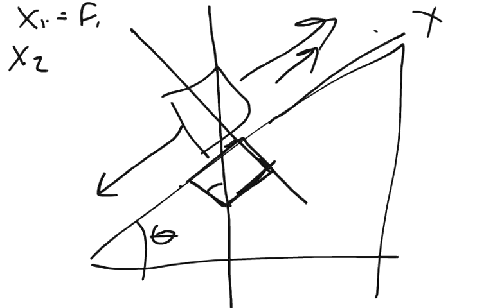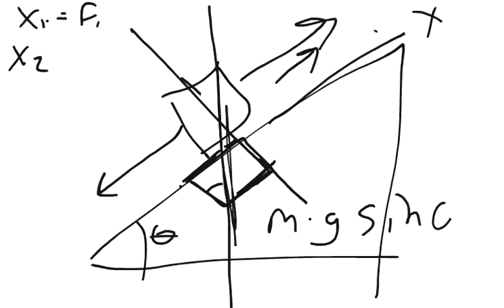So depending on how you want to do it, we are trying to figure out its movement in this direction. So either way, we're going to use the opposite over the hypotenuse. And so we're going to use sine theta times, so we're going to do our force, our force of gravity is mass times gravity. So we're going to do that force times sine theta, and that's going to equal x2. So x2 is mass times gravity times sine theta.